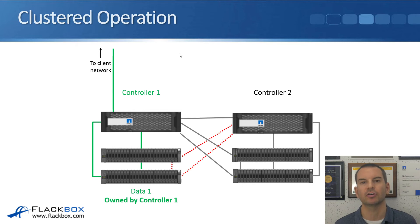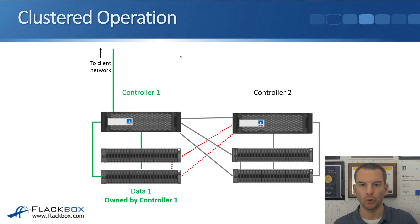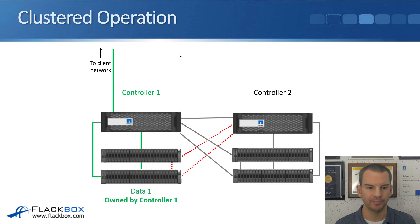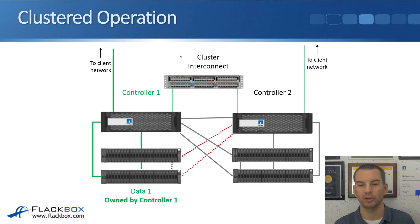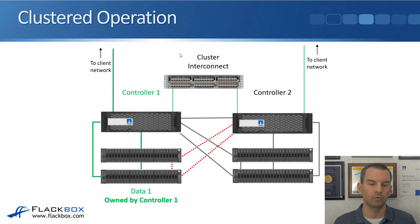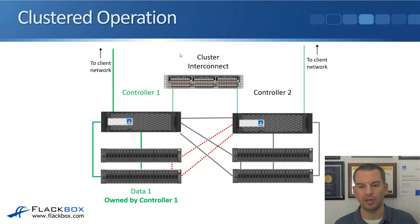In both 7-mode and Cluster mode, disks are always owned by one and only one controller. A difference is that in 7-mode, whenever a client accessed disks owned by Controller 1, that traffic would go through Controller 1 only. With Clustered ONTAP, client connections can come in on any controller in the entire cluster. Data 1 is owned by Controller 1 and served by it, but because we've got the Cluster Interconnect, a client can come in over Controller 1 or over Controller 2. If the client hits Controller 1, it goes directly through to the disk shelves; if it hits Controller 2, it goes via the Cluster Interconnect, adding a tiny but minimal amount of latency.